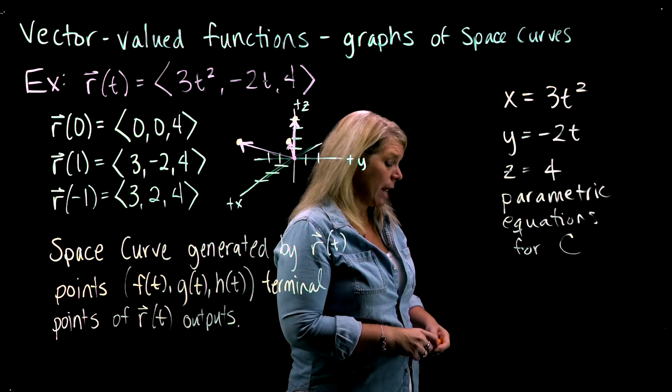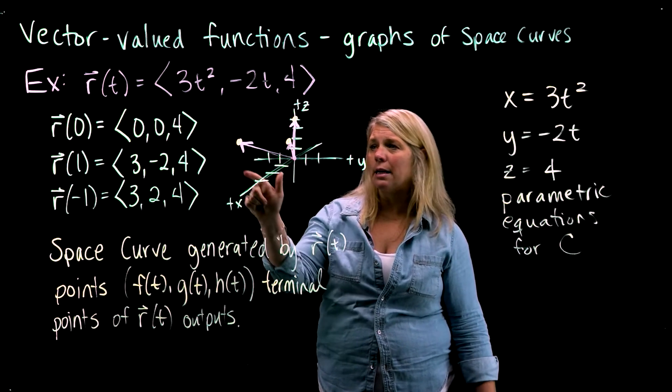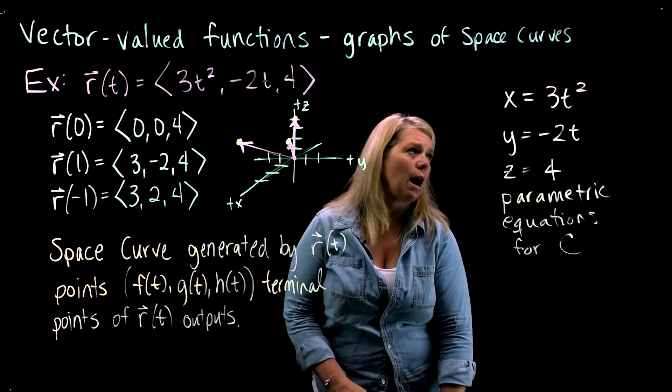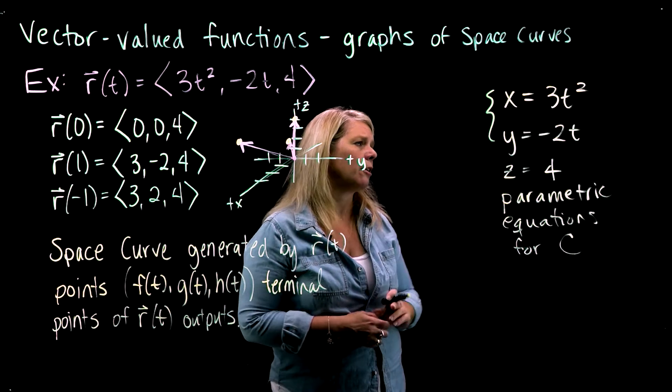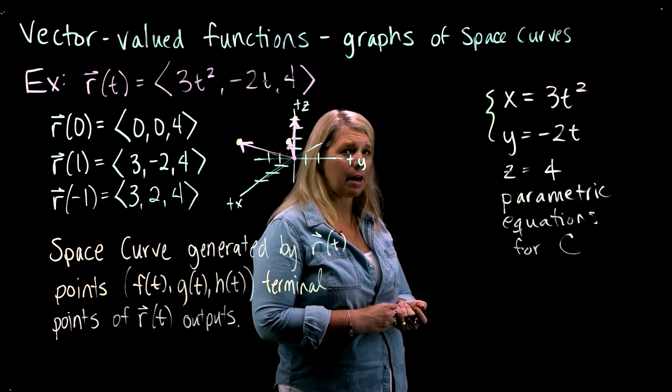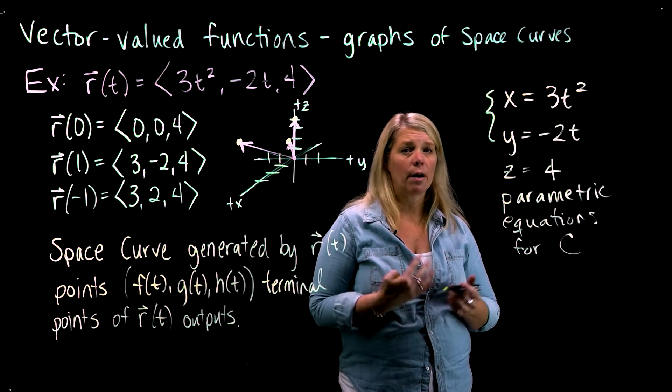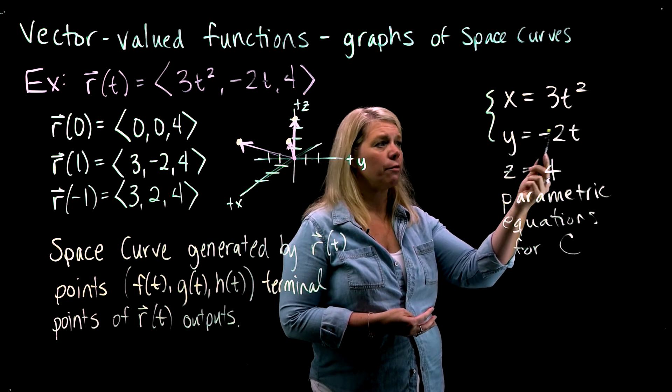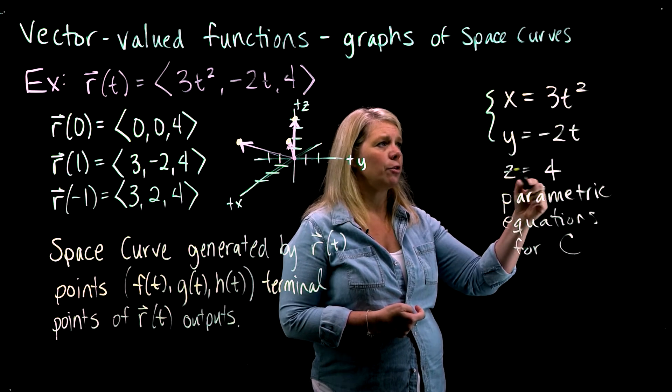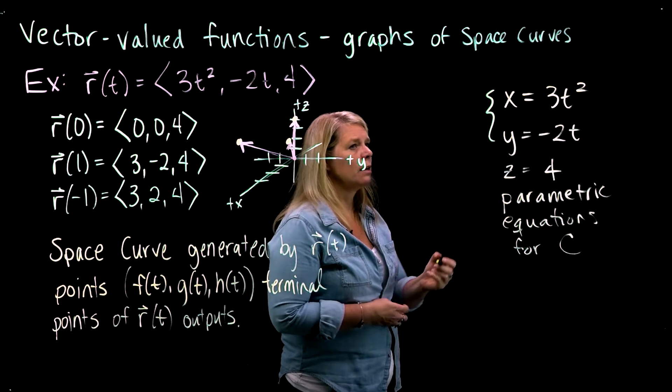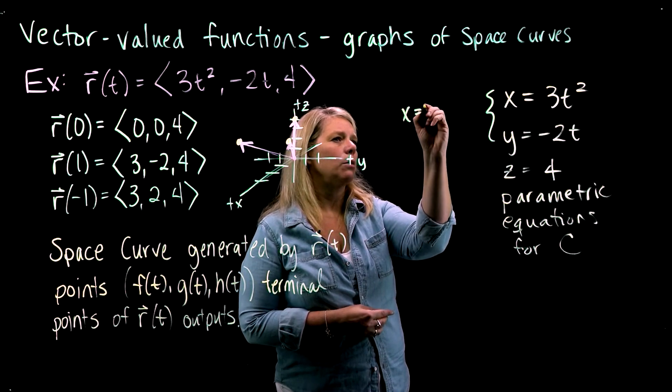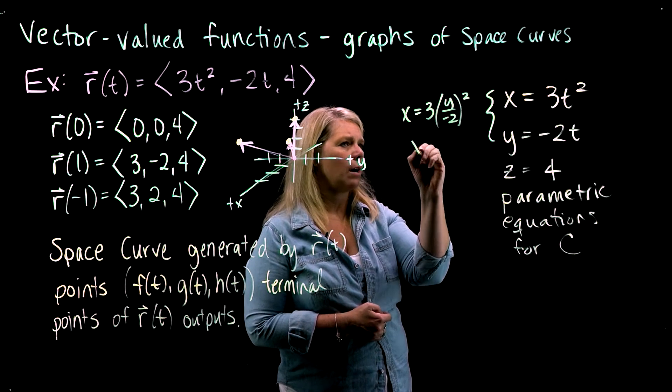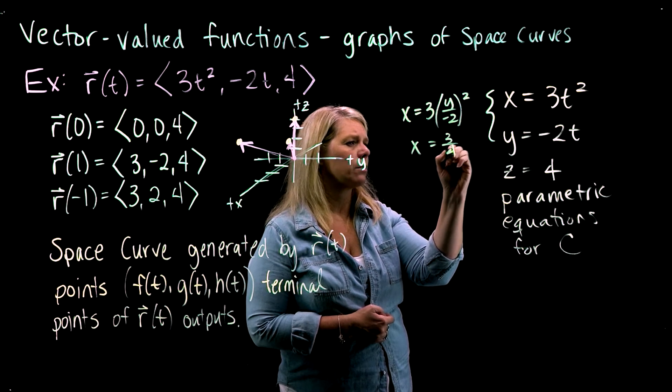So these equations generate the space curve. I've got three points here. You can see when you look at these equations, that between the x and y, you might be able to recognize that you could eliminate the parameter for the x and y, and you'll get the equation of a parabola. If I eliminate the parameter, maybe I want to solve the y equation for t. So I'll have t equals y over negative 2 and substitute into that first equation. Then I'll get x equals 3 times y over negative 2, the quantity squared, or x equals 3 fourths y squared.